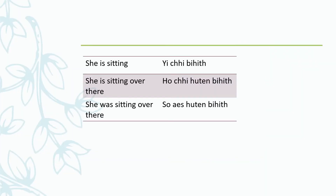When the person is near you, or when the object is within your reach, you would use the word y. So for 'she is sitting here': yic behit, yic yeten behit. And if you are introducing your friend who is standing next to you, for example, 'meet my friend, she is Radha': yic Radha.